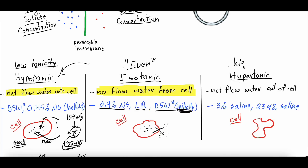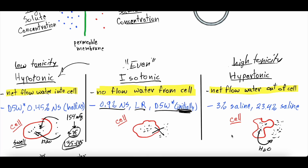Hypertonic fluids have high tonicity — the opposite of hypotonic. You get net flow of water out of the cell because the fluid outside is more concentrated than inside. If the cell has ten solute particles and the outside has twenty, water flows from inside the cell to outside, causing the cell to shrivel up and become damaged. Examples include 3% saline and 23.4% saline — both well above the isotonic 0.9% normal saline — and all cause fluid to leave the cell and move to the extracellular space.